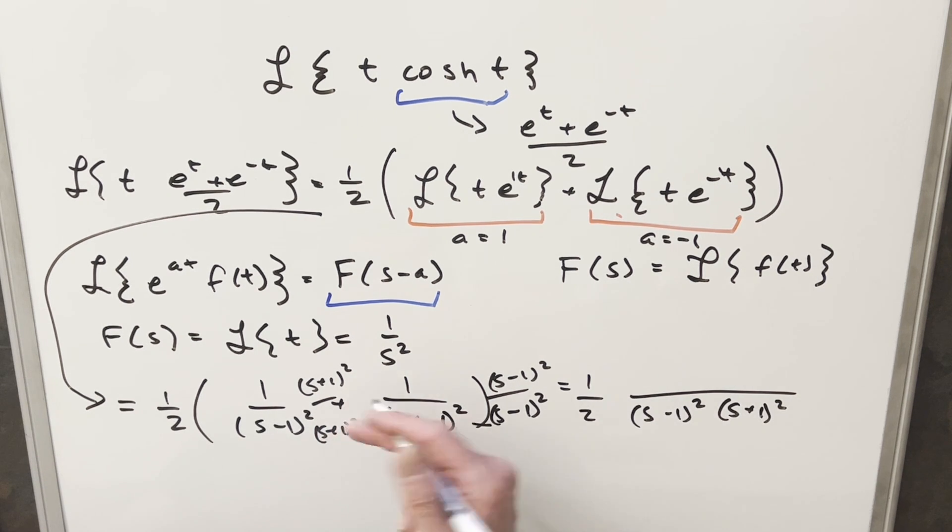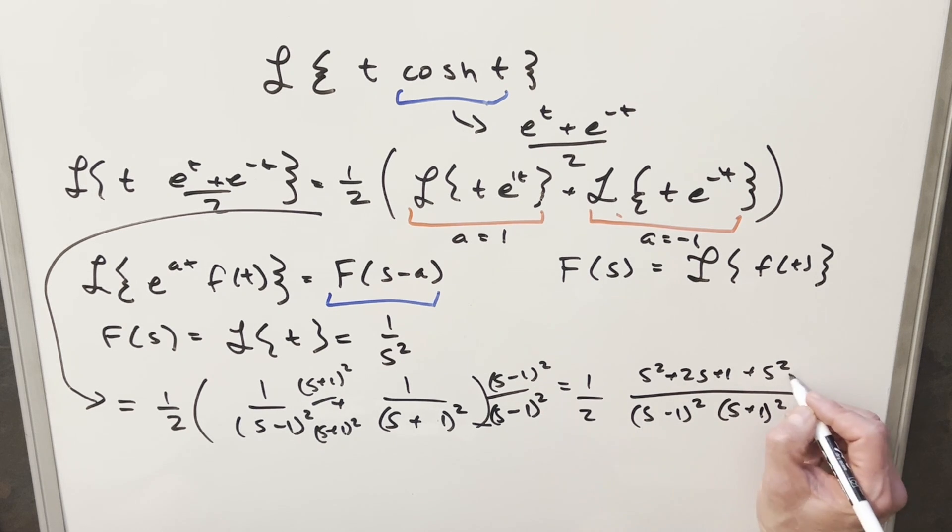Then we'll square these out. So s plus one squared is going to be s squared plus two s plus one. And this one's going to be s squared minus two s plus one. But then the two s's are going to cancel.